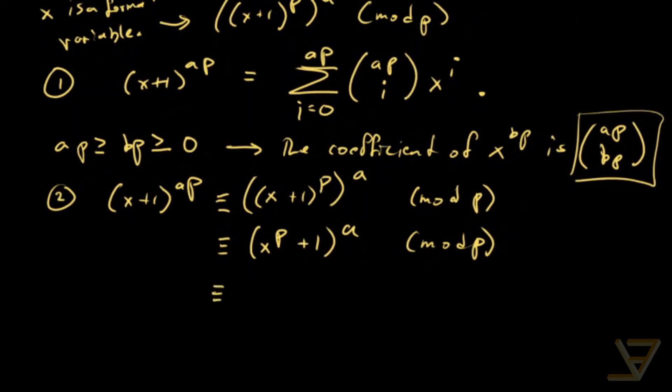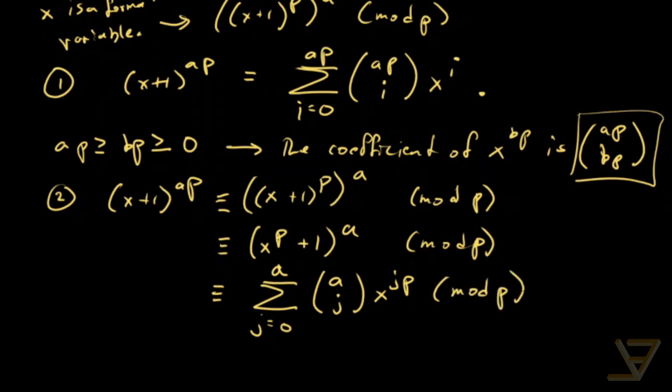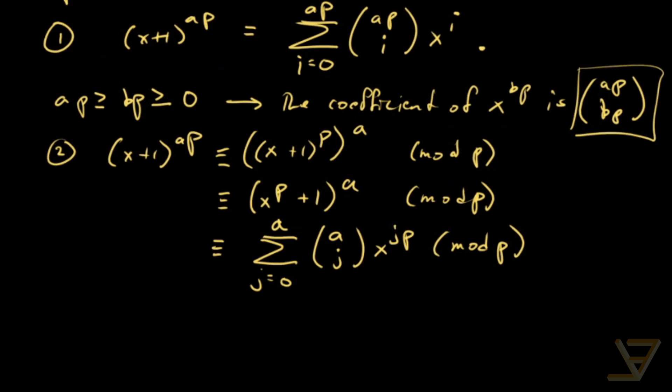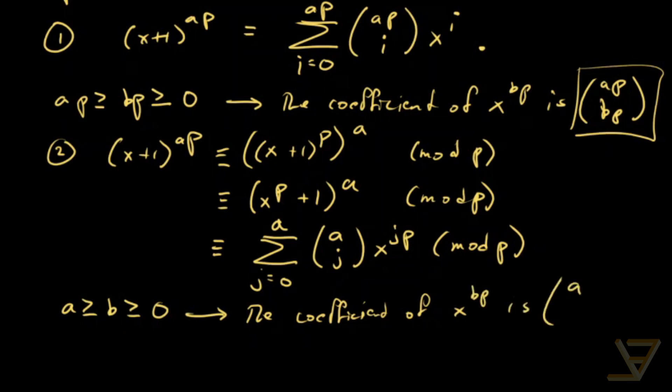And now we're going to use a binomial theorem to get that this is the sum from j equals 0 through a of a choose j times x to the j p mod p. And notice that over here a is greater than or equal to b is greater than or equal to 0. So the coefficient of x to the b p is a choose b.